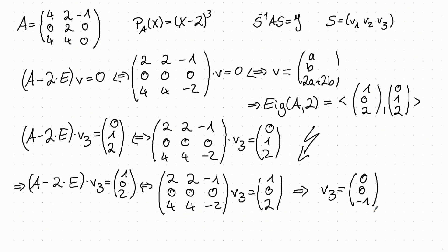Now we write the vectors we computed into our base change matrix S. We start with the eigenvector (1, 0, 2). Since the vector V3 = (0, 0, minus 1) belongs to this eigenvector, we write it next to it in the columns of the matrix.